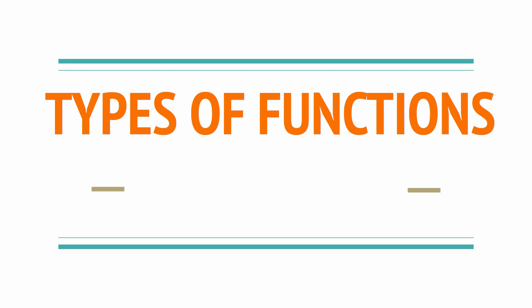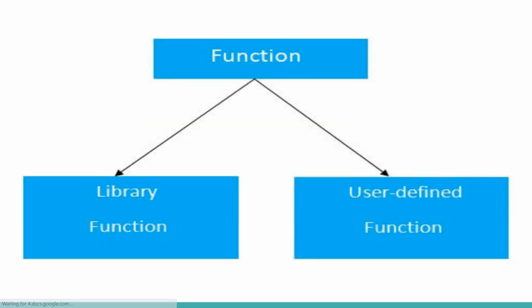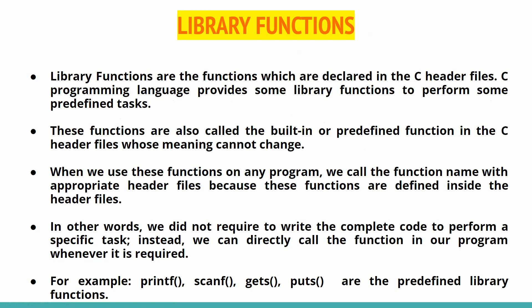In this tutorial we will learn about types of functions. In C programming there are primarily two types of functions: the first one is library function and the second one is user defined function. Let us understand each one of them.